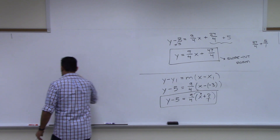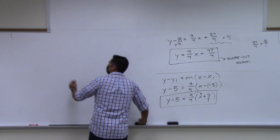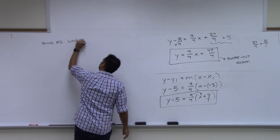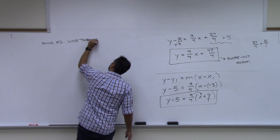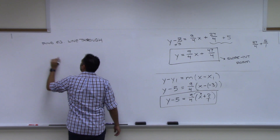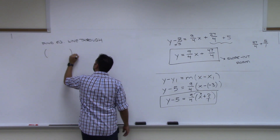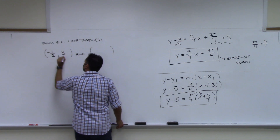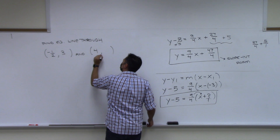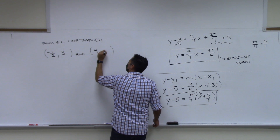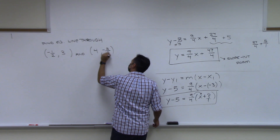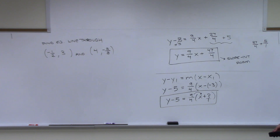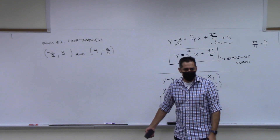I'm going to do one more example and then ask you to do one. Same procedure — find the equation of the line. What do you think I'm going to do with the points to make it hard? Fractions. Exactly. The two points are (−1/2, 3) and (4, −5/8). Fractions just make the computation harder — the actual procedure is exactly the same.